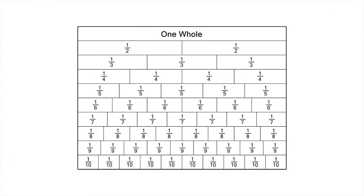Let's summarise what we've found. One half, two quarters, three sixths, four eighths, and five tenths are equivalent fractions.